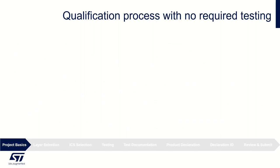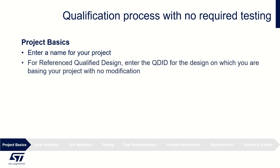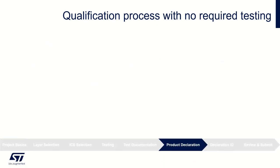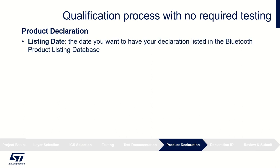The form offers several boxes where you can fill in the basics of your project: the name of your project, and if it is a reference qualified design, enter the QD ID for the design on which you are basing your project. Search for the ID in Launch Studio or if you are not sure, ask your supplier. For listing date, enter the date you want your declaration listed in the Bluetooth product listing database.